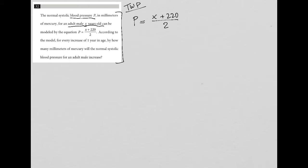According to the model, for every increase of one year in age, by how many millimeters of mercury will the normal systolic blood pressure for an adult male increase?